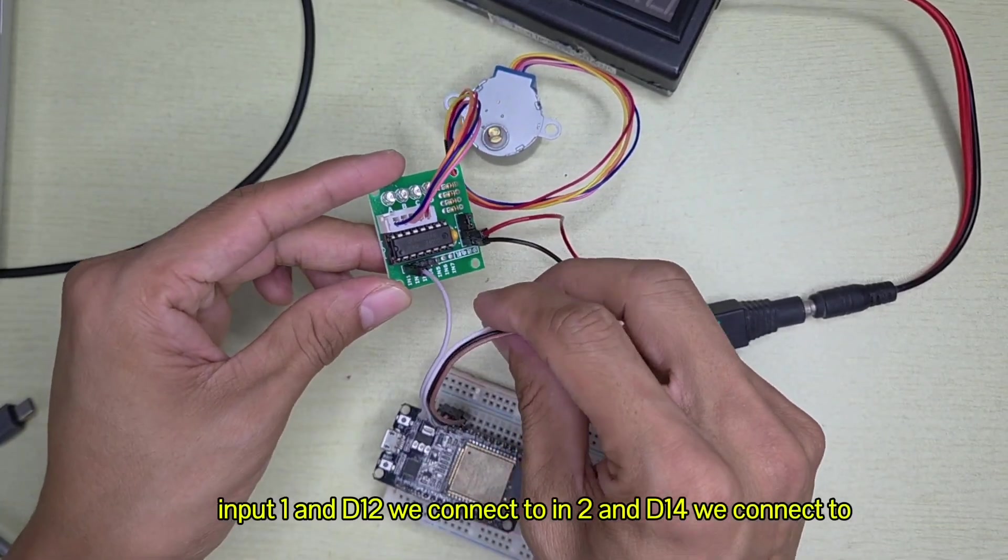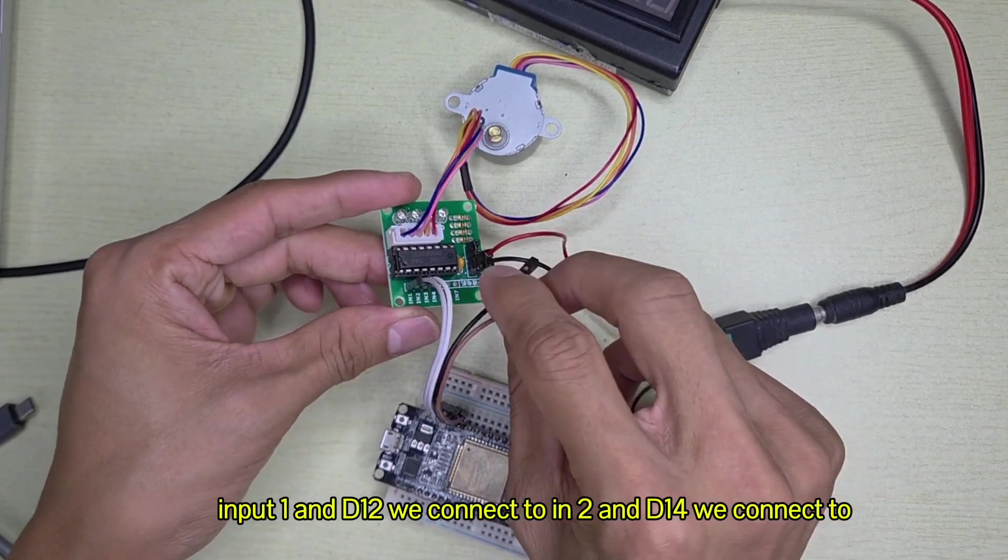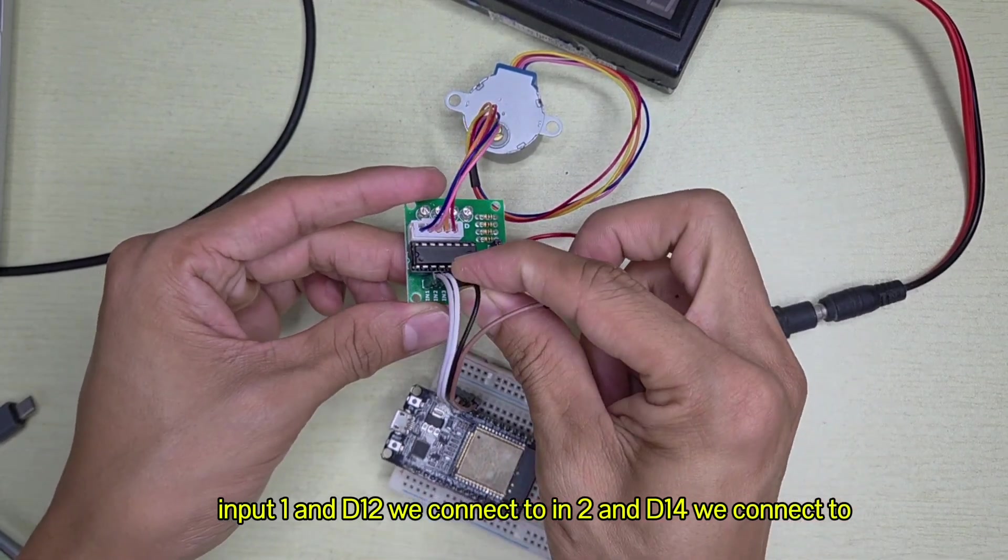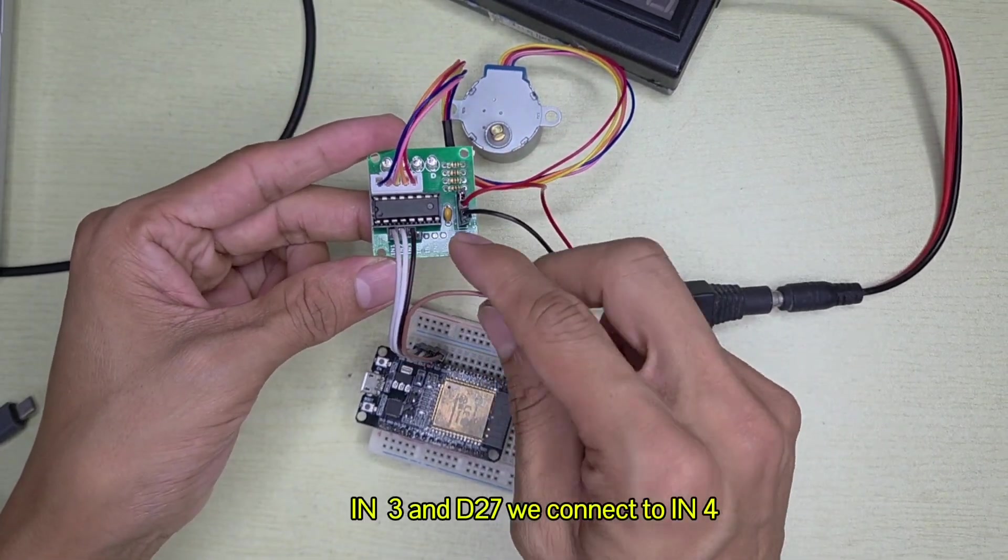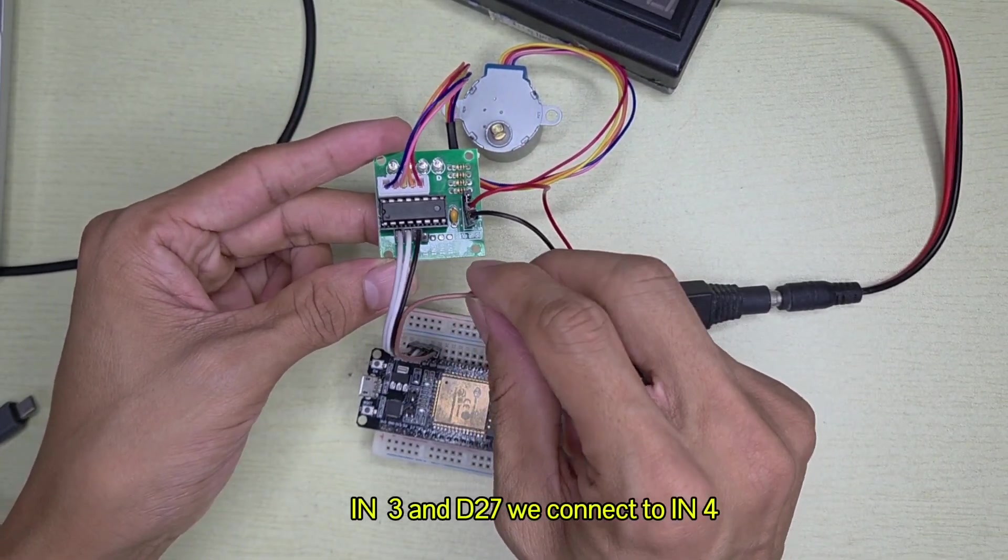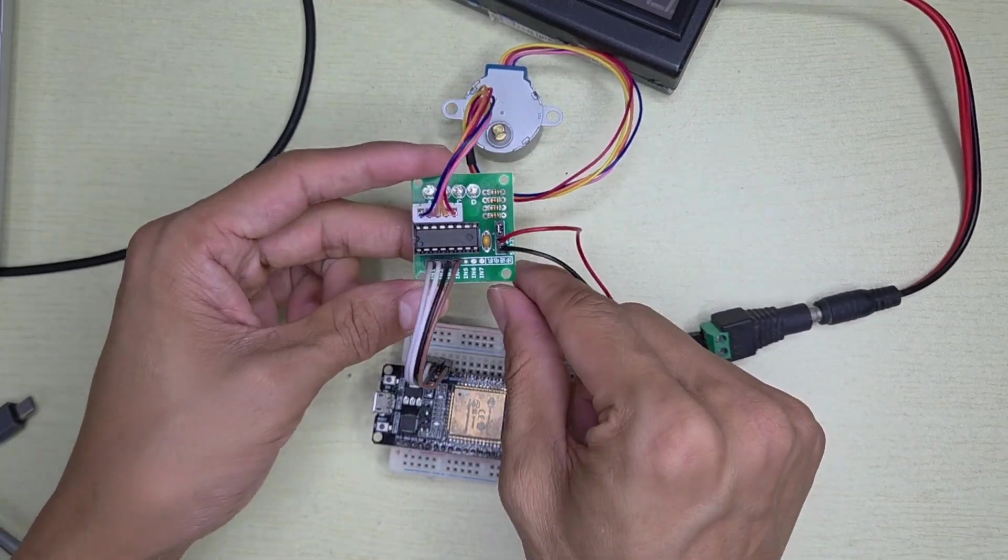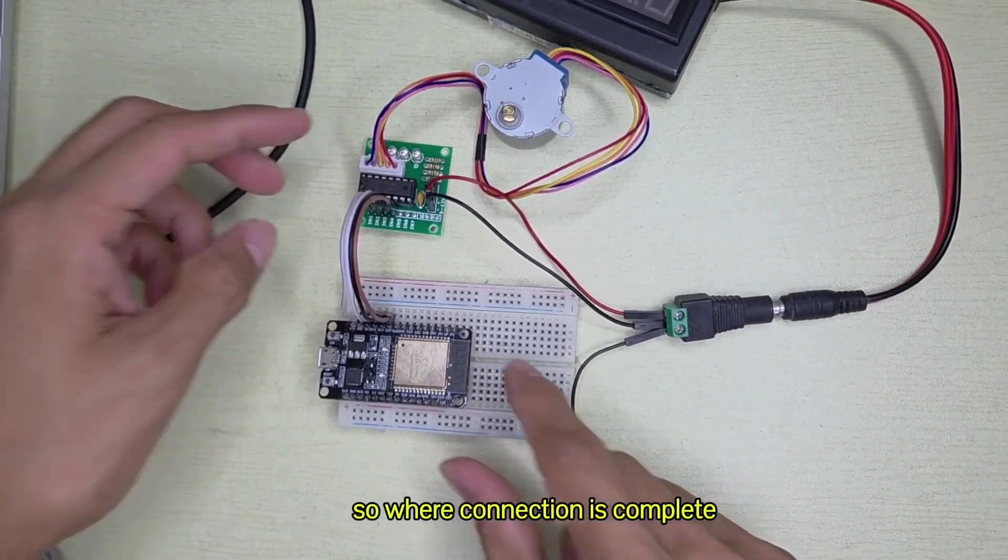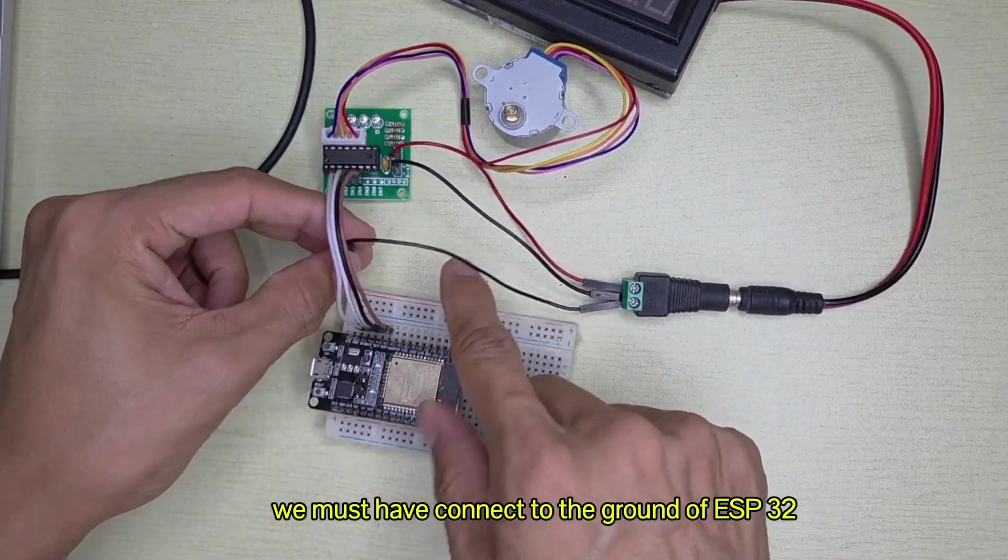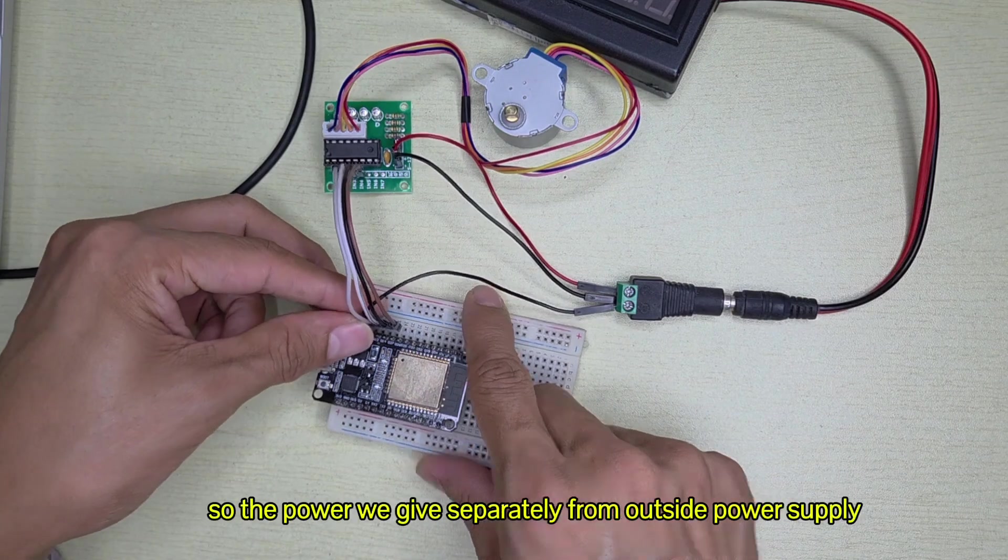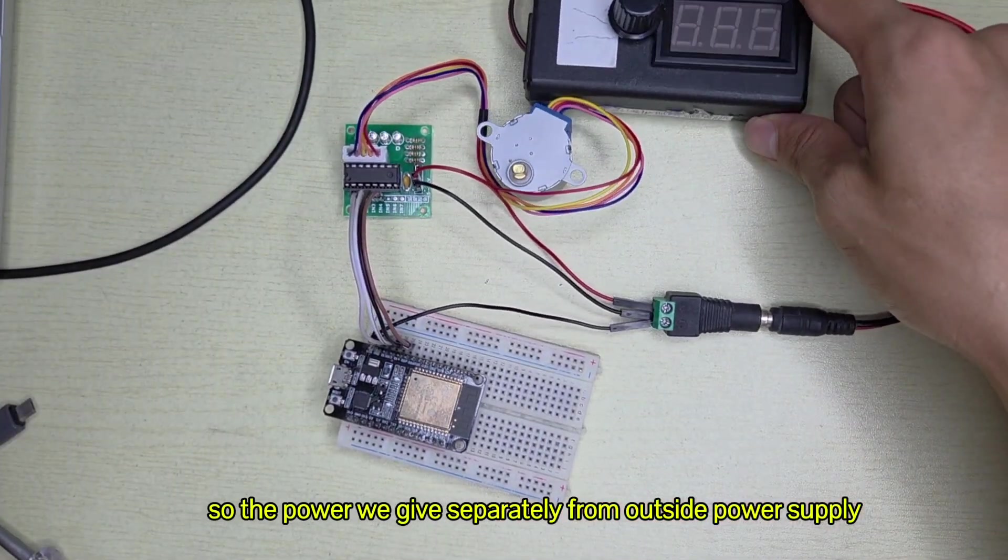Pin number 13 we connect to input 1, D12 we connect to input 3, and D27 we connect to input 4. Wire connection is complete and the ground we must connect to the ground of ESP32.